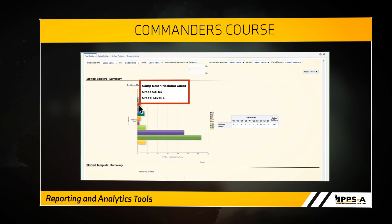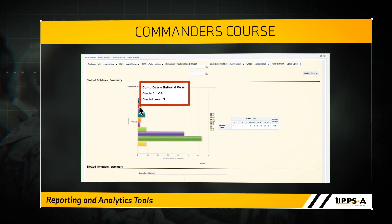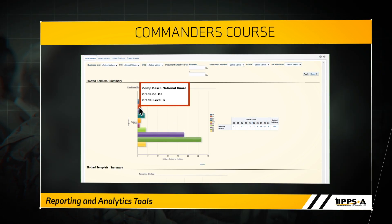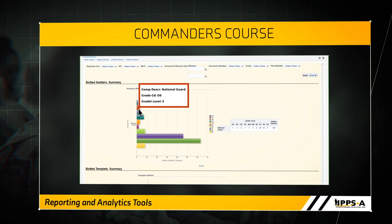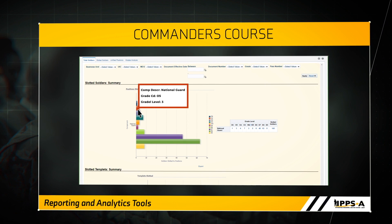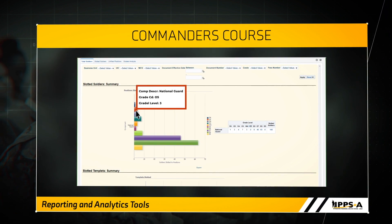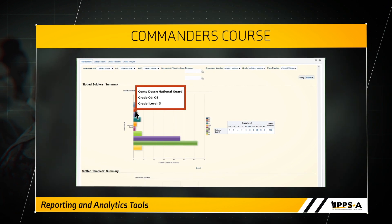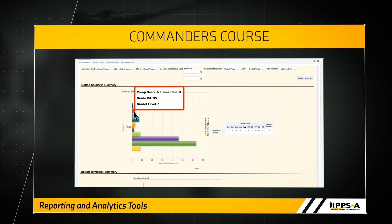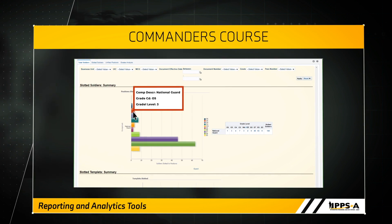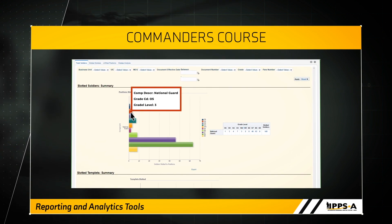If you want to drill down and see specifics, you simply click on the interactive data point. In this example, hovering over the O5 bar, which in this case is red, shows you there are three lieutenant colonels assigned in this unit. Clicking on this data point will display a roster with their detailed information.